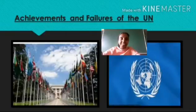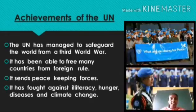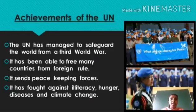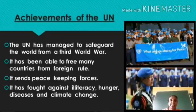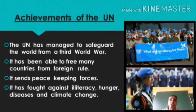Today we will be dealing with the topic: Achievements and Failures of the UN. Firstly, let us discuss the achievements of the UN. The UN has managed to safeguard the world from a third world war. It has been able to free many countries from foreign rule. It sends peacekeeping forces to places where war has just ended to ensure that peace is maintained. The movement against apartheid was also started by the UN — apartheid means a political system in which people of different races are separated. The UN has fought against illiteracy, hunger, diseases, and climate change to make this world a better place.